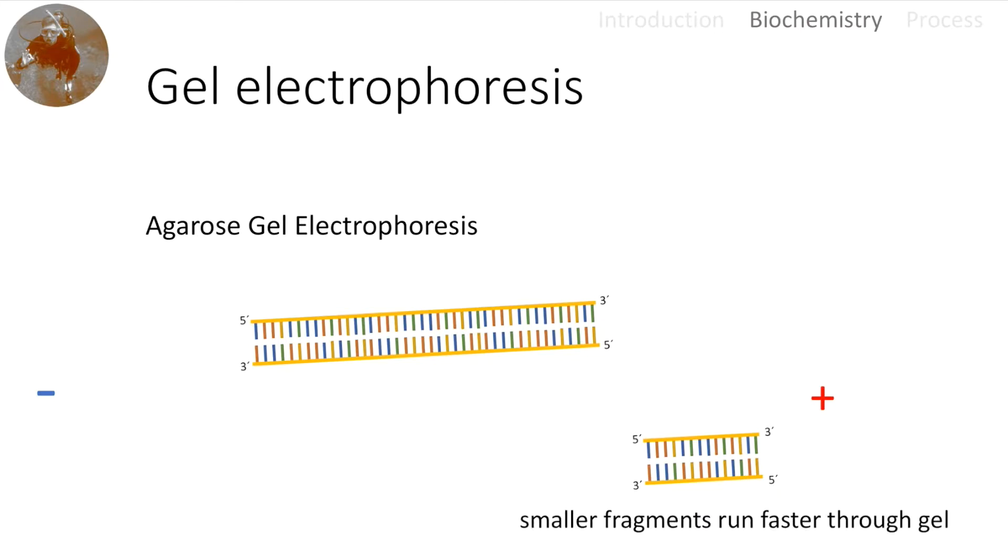As a conclusion, smaller fragments run faster through the gel. So small fragments also travel a longer distance. And this is a key to understanding gel electrophoresis.